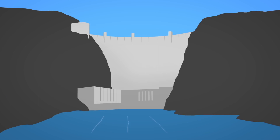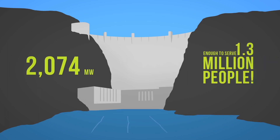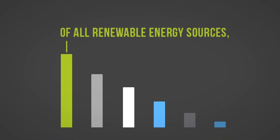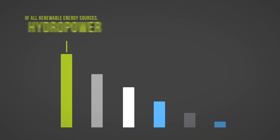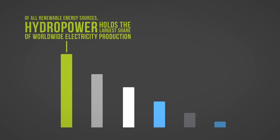The Hoover Dam in the United States is a whopping 2,074 megawatts, which is enough to serve 1.3 million people. Of all renewable energy sources, hydropower holds the largest share of worldwide electricity production.